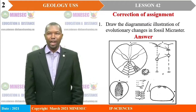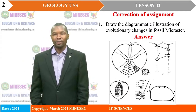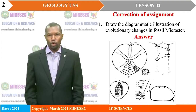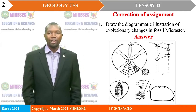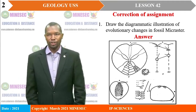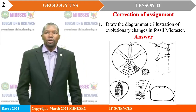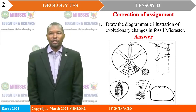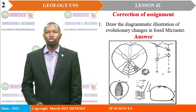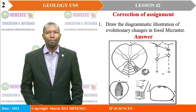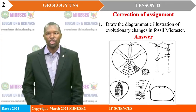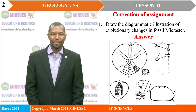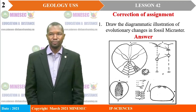During our lesson 41, we had some work to do at home. We shall proceed by looking at the correction. The first part of the question requires that you should draw the diagrammatic illustration of evolutionary changes in fossil microcosystems.